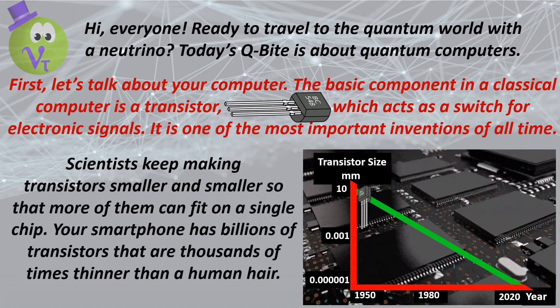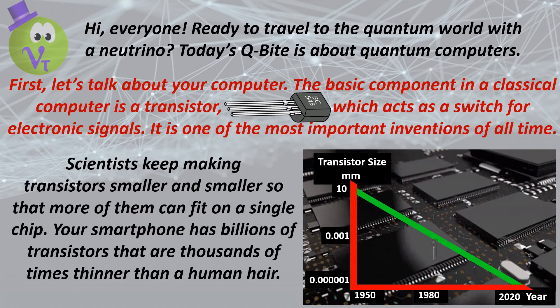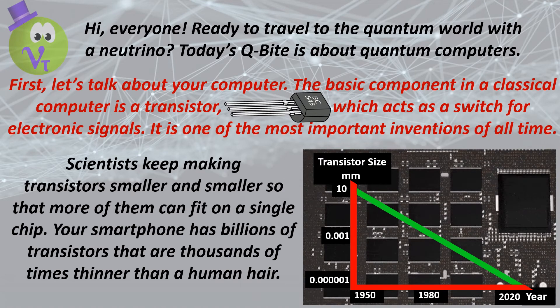Scientists keep making transistors smaller and smaller so that more of them can fit on a single chip. Your smartphone has billions of transistors that are thousands of times thinner than a human hair.